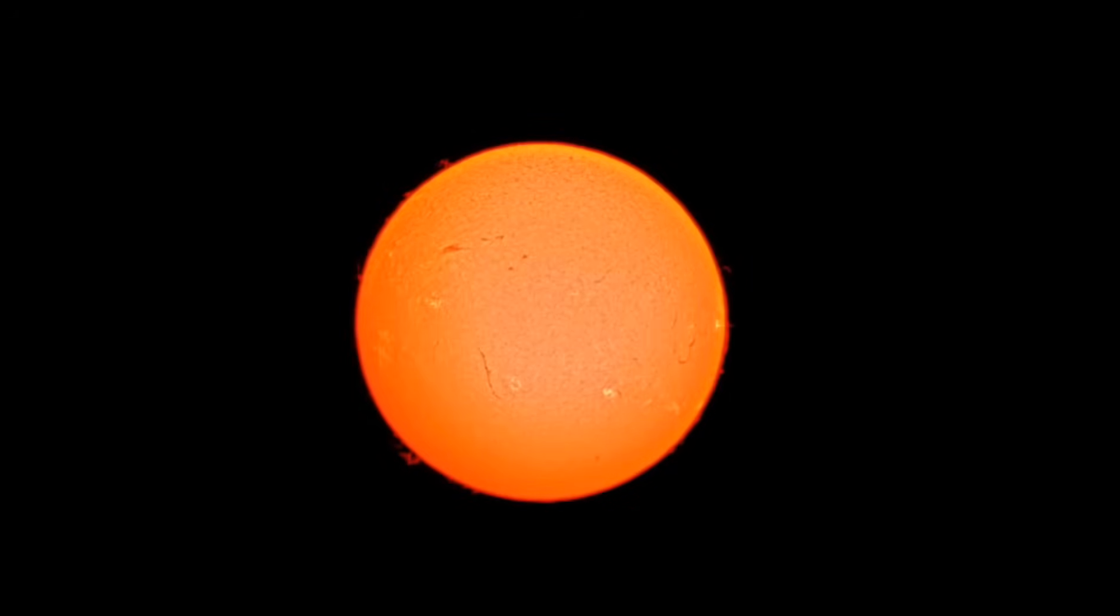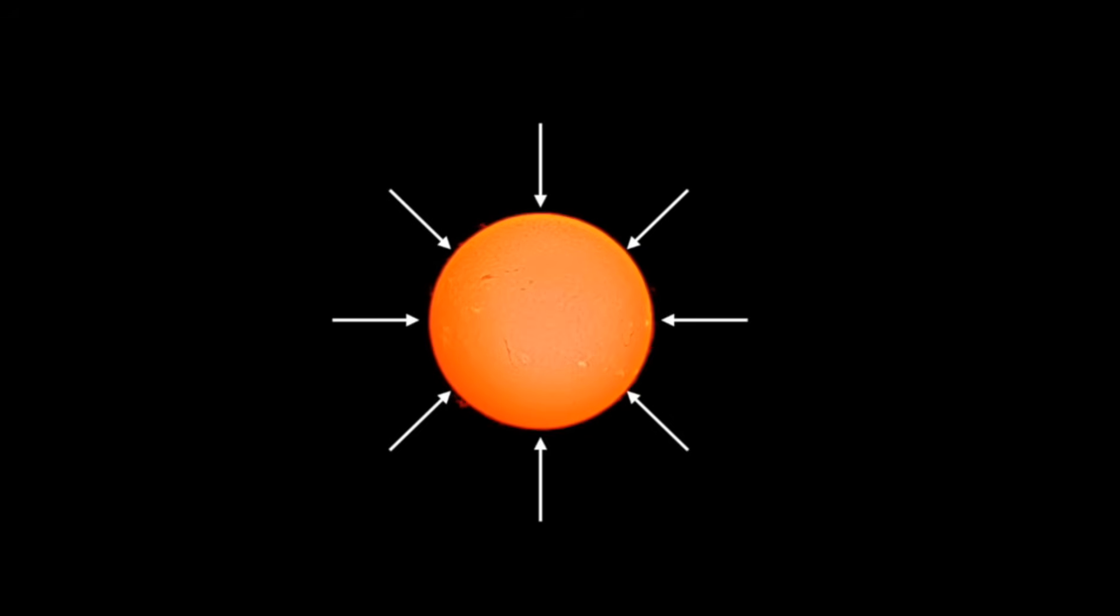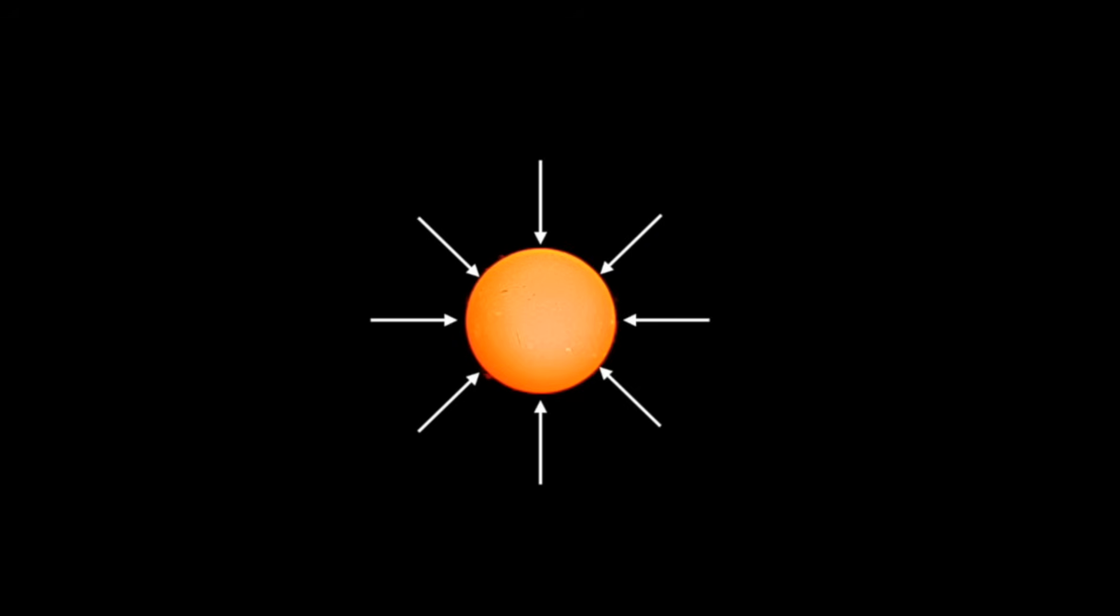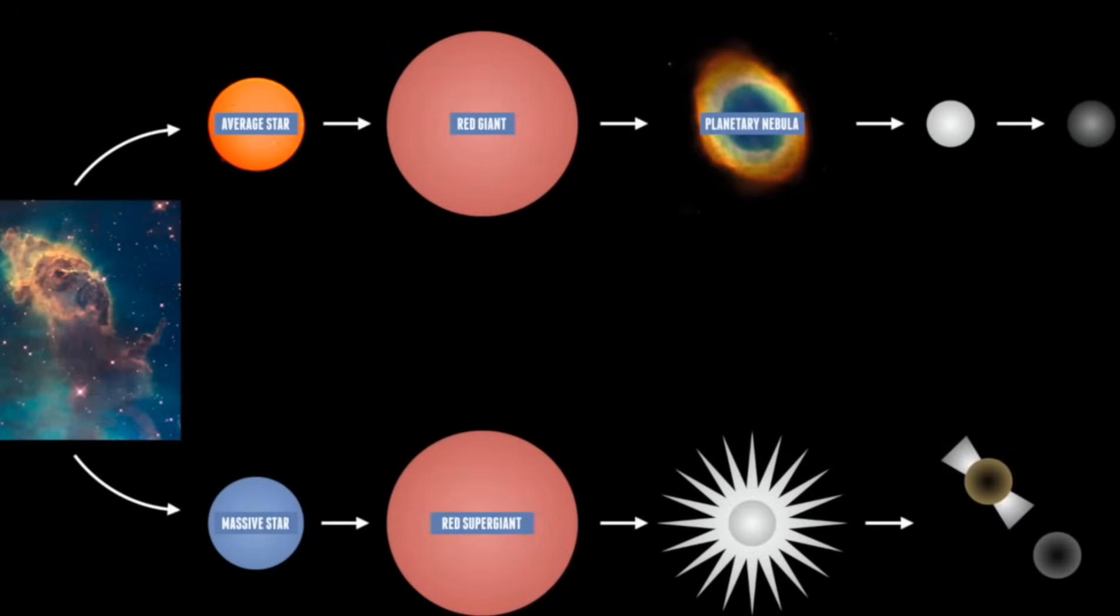When low mass stars die, they collapse under their own weight until their centres act in the same ways like a solid. A star like our sun will collapse at the end to about twice the size of Earth. These white hot dying stars are called white dwarfs by astronomers. Perhaps the best known white dwarf orbits the brightest star in the sky, Sirius, but it requires quite a large telescope to see it.